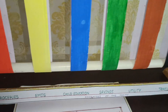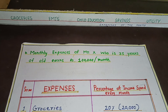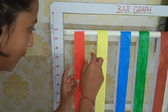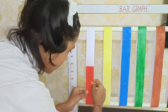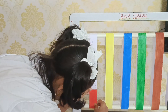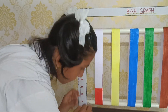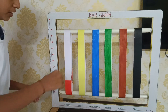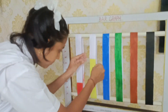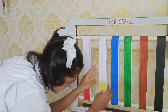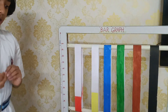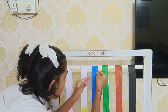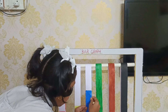First is grocery — he spends 20% on grocery, so we will take it to 20%. Then he spends 30% on EMI, so we will take it to 30%. He spends 10% on child education, so we will take it to 10%.